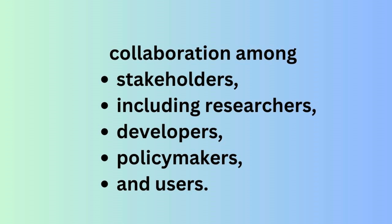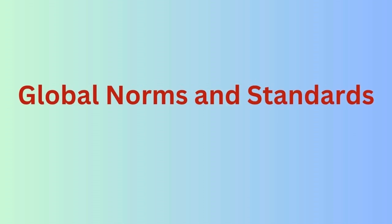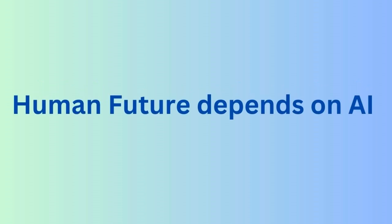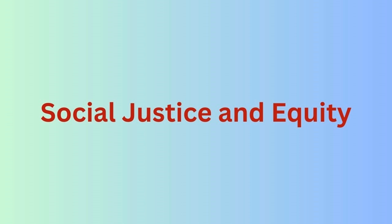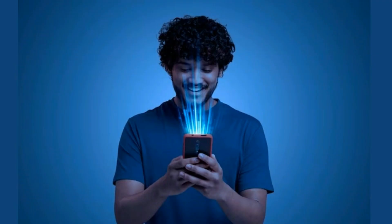For example, we need to promote interdisciplinary research and education on AI, engage in public dialogue and participation, and establish global norms and standards for AI governance. Our human future depends on how we shape and use AI in the present. We have the opportunity and the responsibility to create a positive and inclusive future for ourselves and our future generations. We can use AI to empower human creativity and diversity, social justice and equity, and promote global peace and cooperation. It depends on us how we use this technology and make the most out of it.